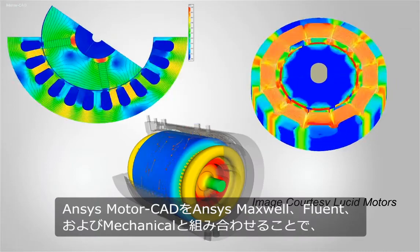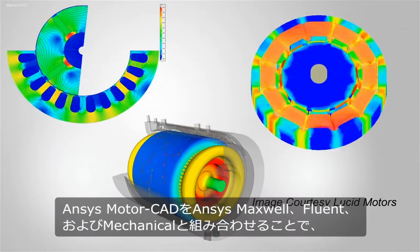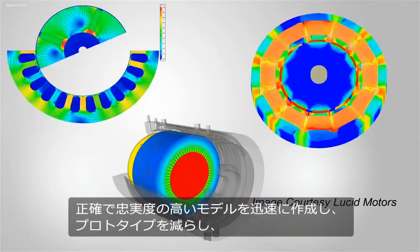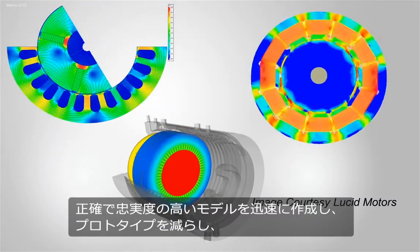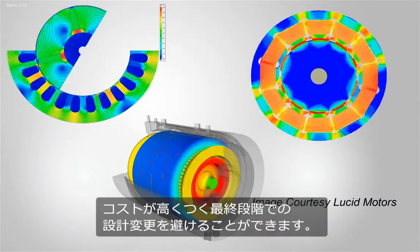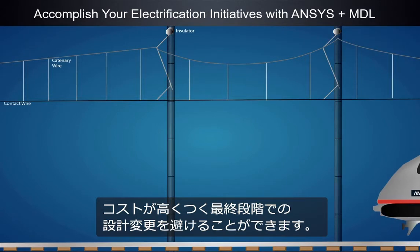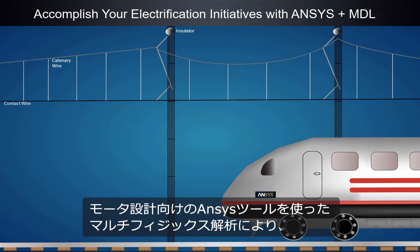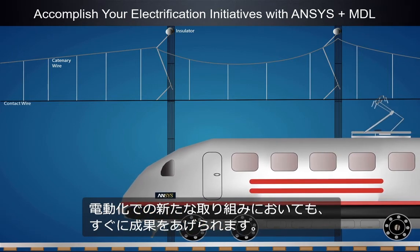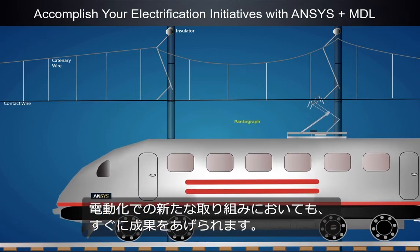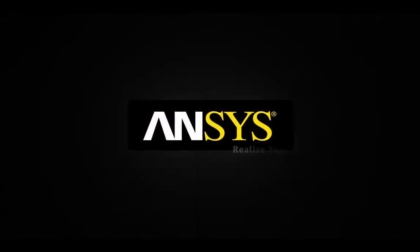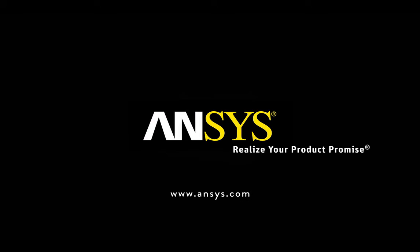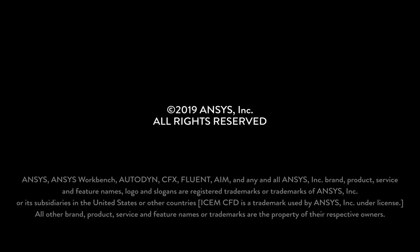Combining ANSYS MotorCAD with ANSYS Maxwell, Fluent and Mechanical helps create accurate high-fidelity models faster, reduces prototypes, and eliminates costly last-minute design changes. Multi-physics analysis with ANSYS MotorCAD tools for motor design delivers a comprehensive and efficient electric machine development workflow.